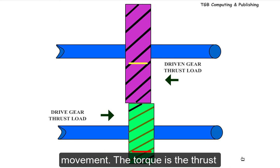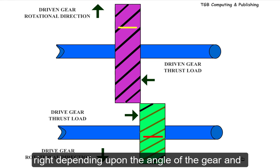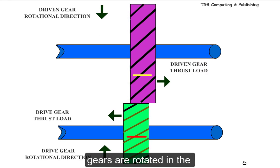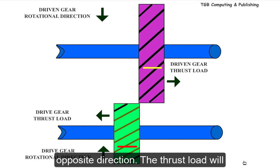The torque is the thrust pushing the gears left to right depending upon the angle of the gear and the rotation direction. If the gears are rotated in the opposite direction, the thrust load will change to the other direction.